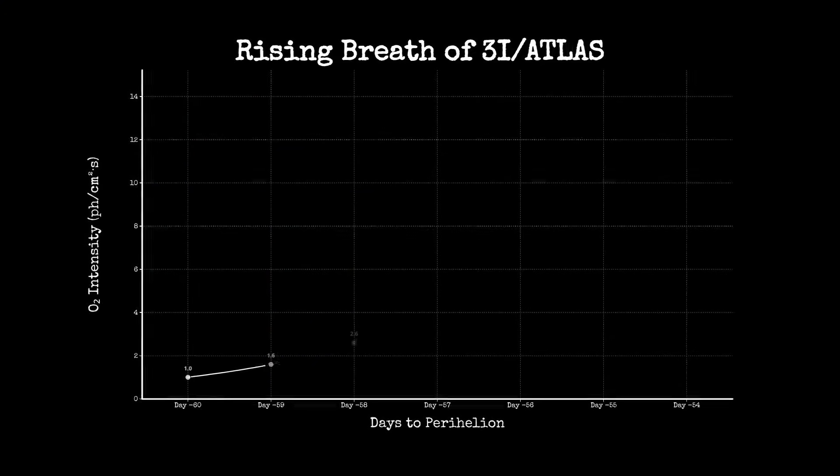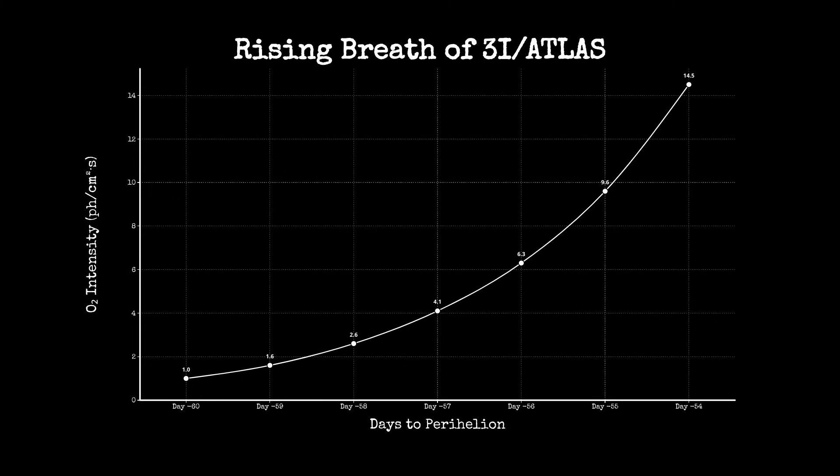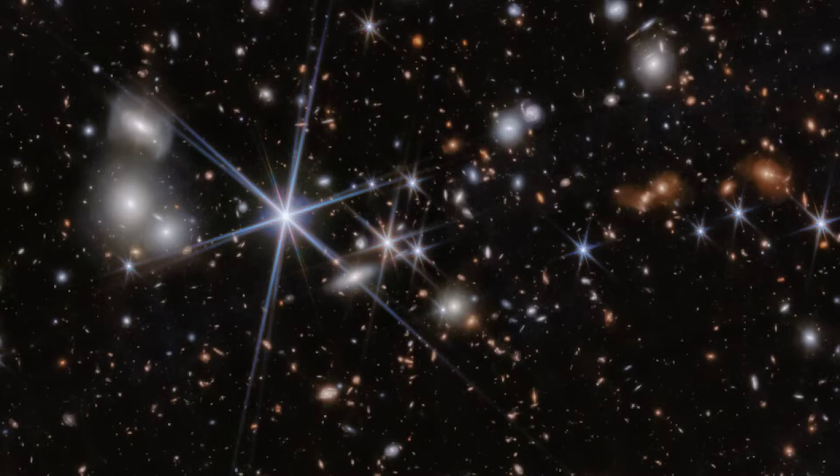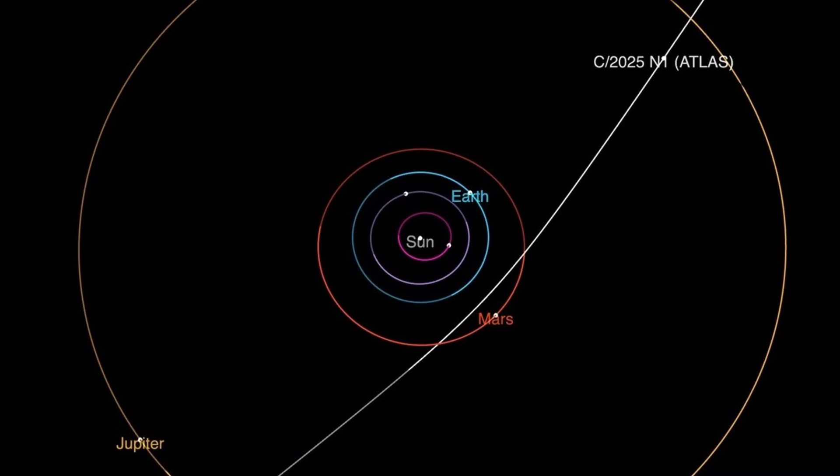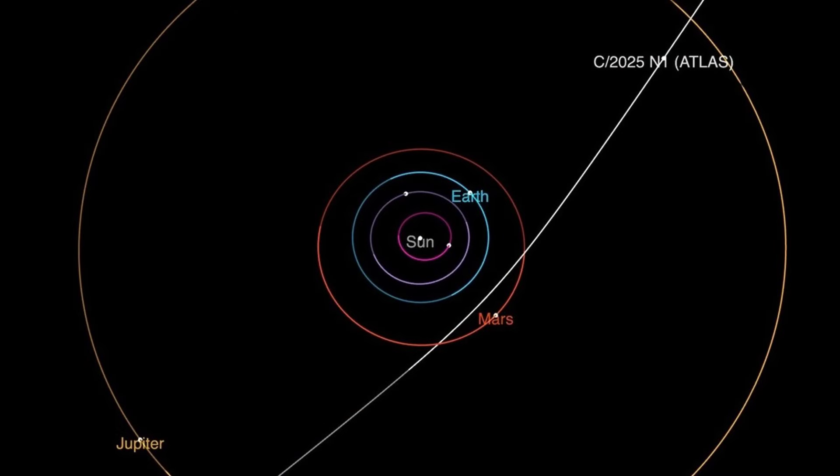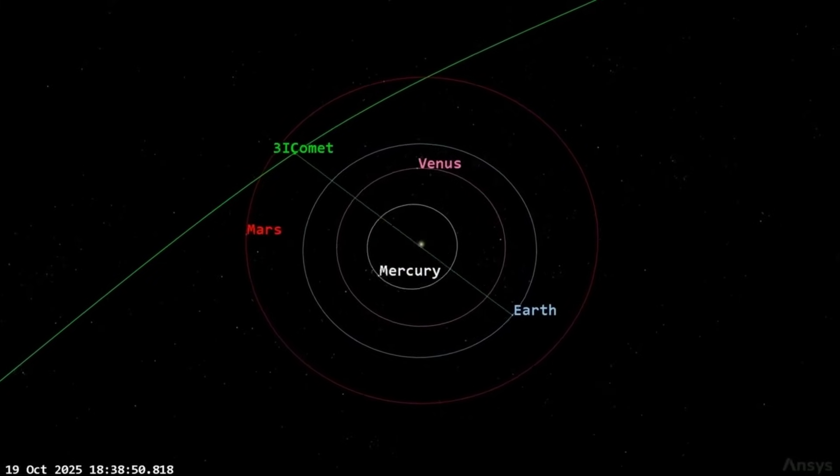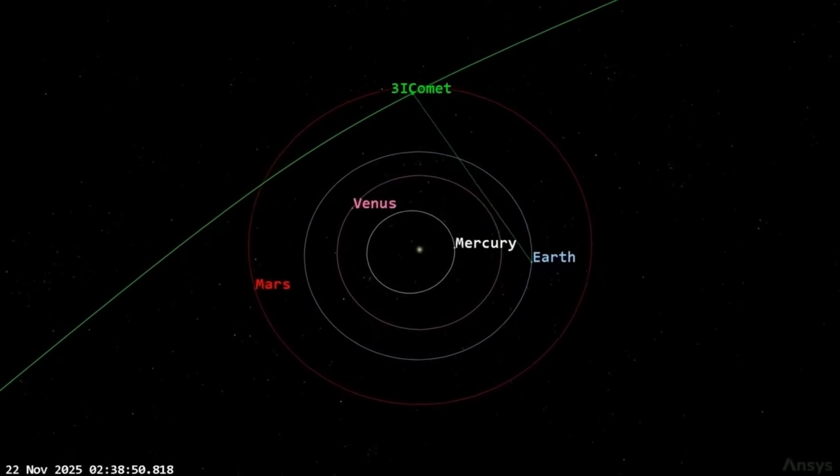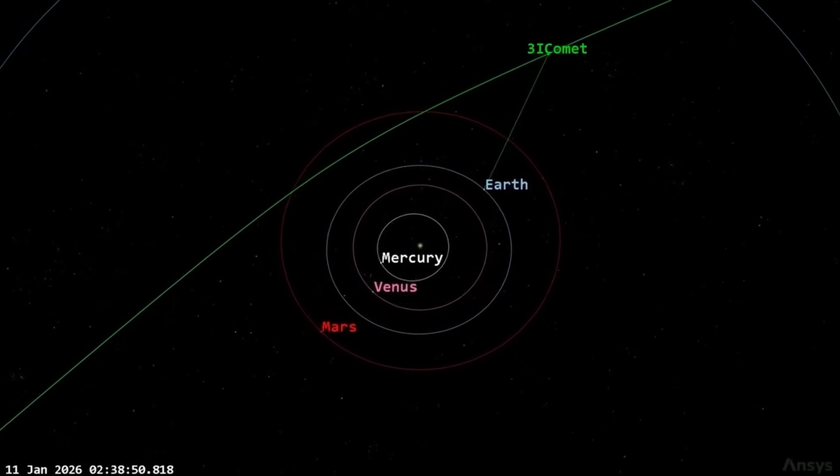As 3I-Atlas approaches its October 30th perihelion, its precise nature remains unresolved. What is certain: in just a few months, this 7-billion-year-old visitor will exit the solar system forever, leaving behind only data and questions that science has yet to answer.